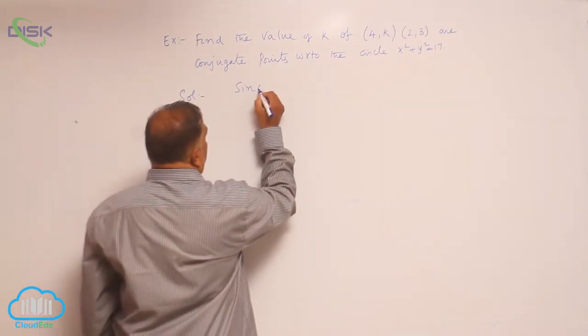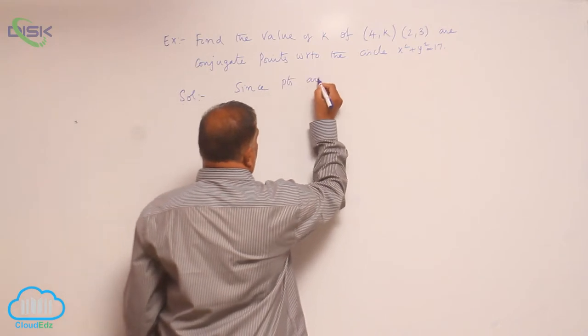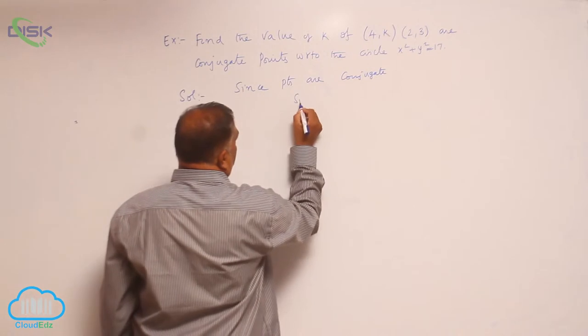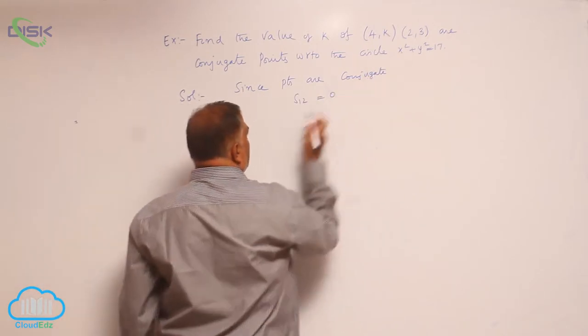Since the points are conjugate, our condition which we just derived is s₁₂ = 0. How to write s₁₂?